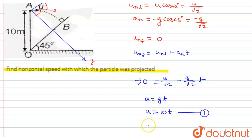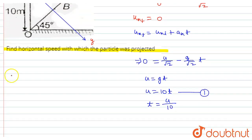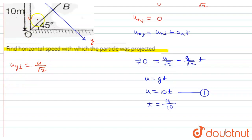In the y-direction, initial velocity u_y = u sin 45° = u/√2. The acceleration in the downward direction is g, and its component along the y-axis is g/√2, since we again take cos 45° or sin 45°. So acceleration in the y-direction equals g/√2.